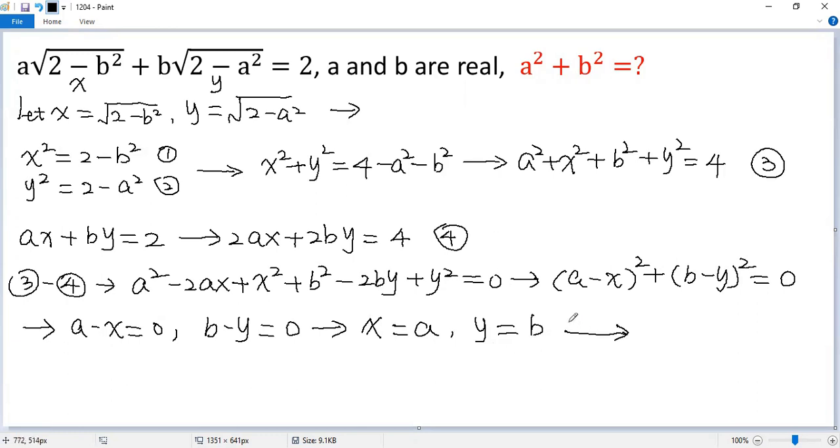Now we plug in x equals a to equation 1. So x squared now becomes a squared equals 2 minus b squared. Both sides add b squared. So we get a squared plus b squared equals 2. That is the final answer.